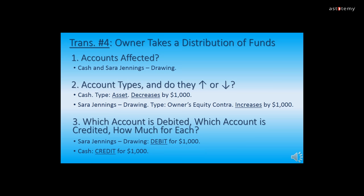Now we go through the first three steps of recording transaction four, Owner Takes a Distribution of Funds. Step 1: the two accounts affected are Cash and Sarah Jennings Drawing. Step 2: Cash is an asset type and it will decrease by $1,000 since she is taking money out of the company. Sarah Jennings Drawing is an owner's equity contra account and it will increase by $1,000. Step 3: Sarah Jennings Drawing will increase with a debit for $1,000. The Cash account will decrease with a credit for $1,000.